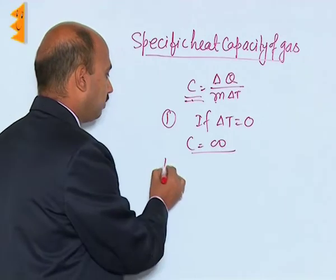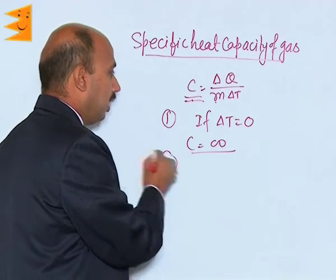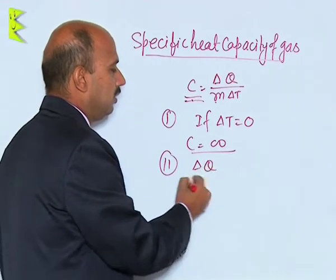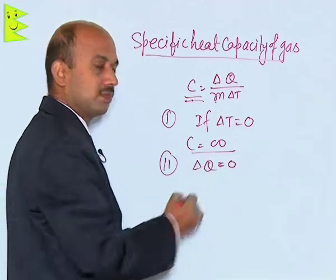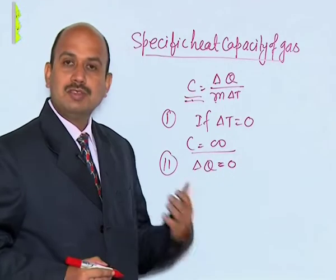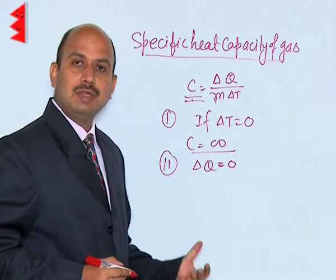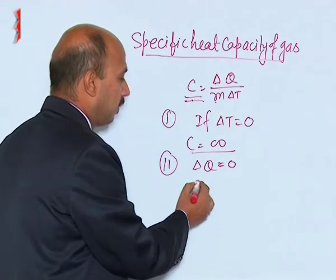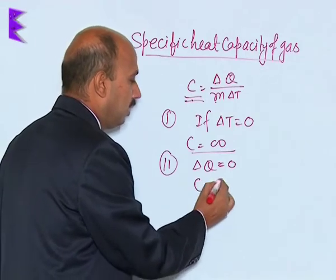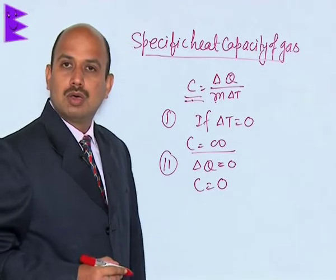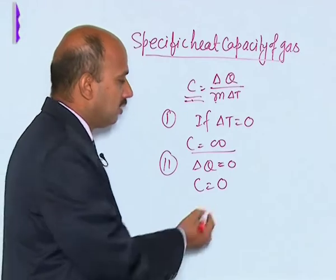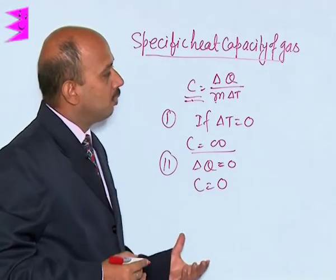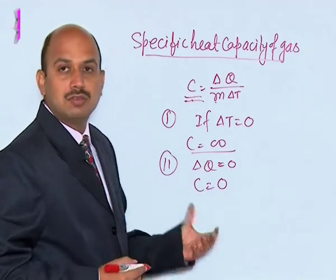The second case: if delta Q is equal to 0, it means there is no transfer of heat, no exchange of heat between the system and surroundings. In that case, the specific heat will be 0. This is actually the case of adiabatic change, where the specific heat of gas is 0.